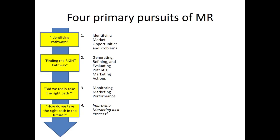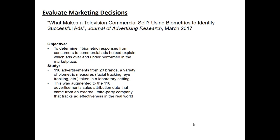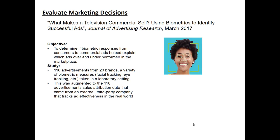Another common pursuit of marketing research is to actually monitor your marketing performance. In other words, once decisions have been made, you track how you perform so that you can learn and improve in real time, or take evaluative actions later to make better choices in the future. An interesting article called 'What Makes a Television Commercial Sell? Using Biometrics to Identify Successful Ads' came from the Journal of Advertising Research in 2017. In this study, they wanted to determine if biometric tracking of consumer responses to television commercials — specifically mostly candy bar commercials — helped explain which TV ads over- and underperformed in terms of driving sales in regional markets.